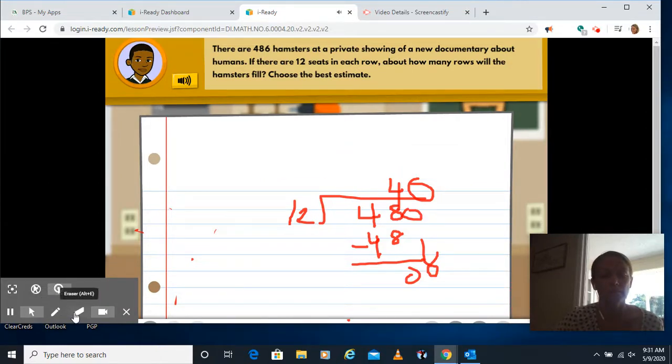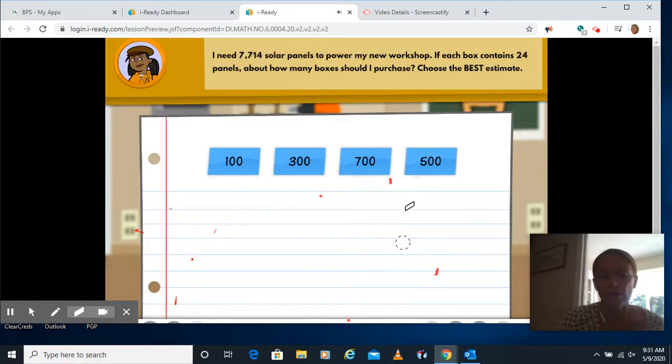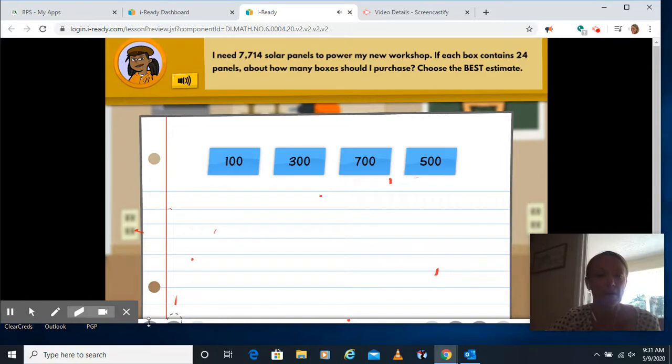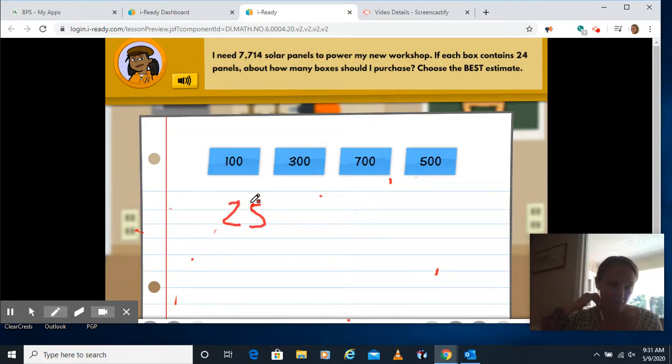Click next. I need 7,714 solar panels to power my new workshop. Each box contains 24 panels. About how many boxes should I purchase? Choose the best estimate. Now on this one, that's a little bit trickier because you're going to have to round both of your numbers here. 24 is closer to 25. So I'm going to round that to 25. And I think 7,714, I'm going to make it close to 7,500.